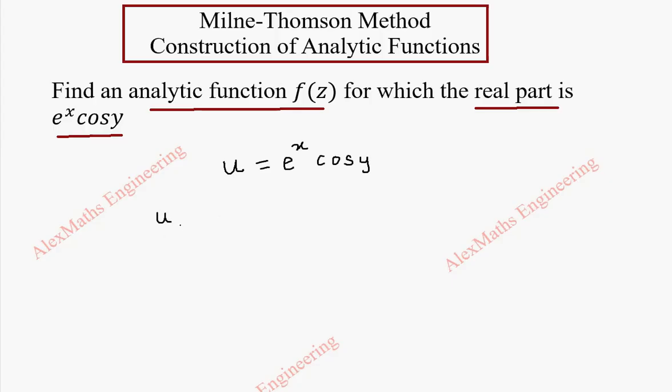We have to find the partial derivative of u with respect to x. So y is a constant, so cos y is kept as it is. The derivative of e^x is e^x, and the constant cos y is written as it is.